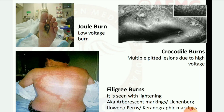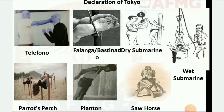Here are some pictures of torture methods — Declaration of Tokyo. First: telephono. Second: falanga and bastinado. Third: dry submarine. Fourth: wet submarine. Fifth: parrot's perch. Sixth: plantain. Last: sawhorse.